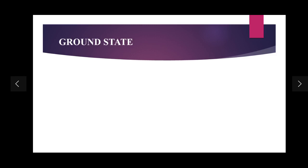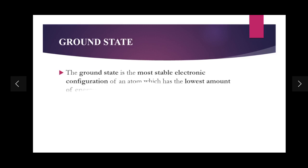So what do we exactly mean by ground state? This question might appear in your examinations — they might ask you what is ground state, they might ask you for the definition. So generally by definition, the ground state means it's the most stable electronic configuration of an atom which has the lowest amount of energy.